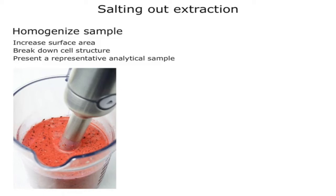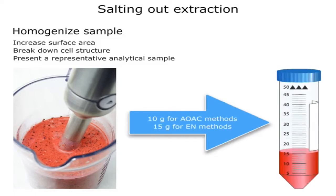To prevent loss of volatile pesticides during homogenization, samples can be pre-frozen and dry ice added. Weigh the appropriate sample amount for your method into a 50ml centrifuge tube.